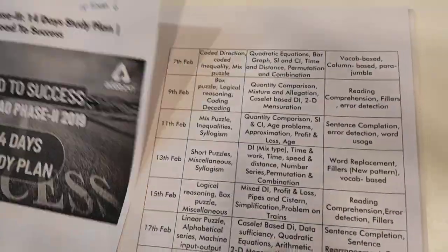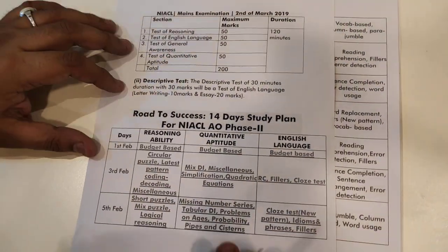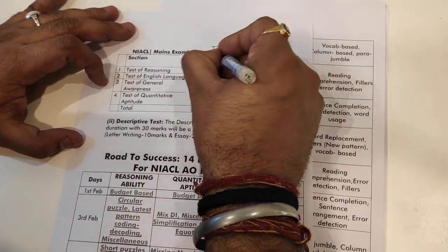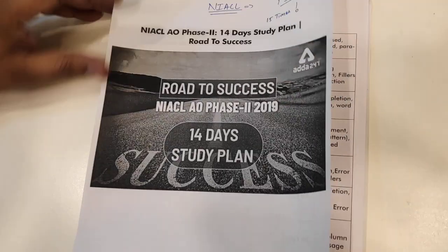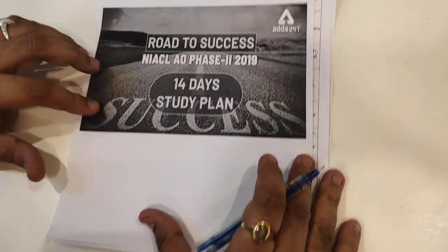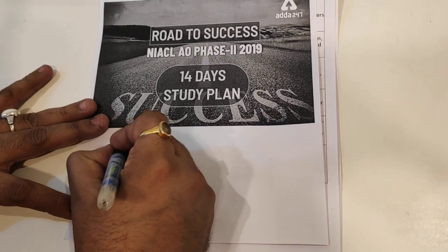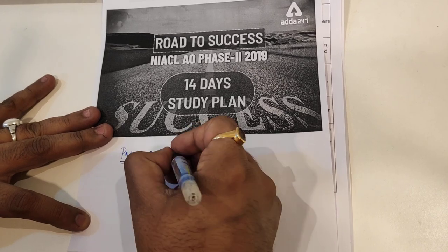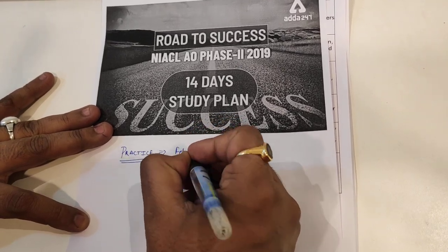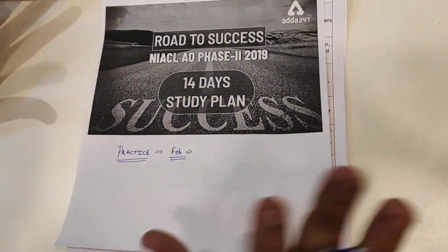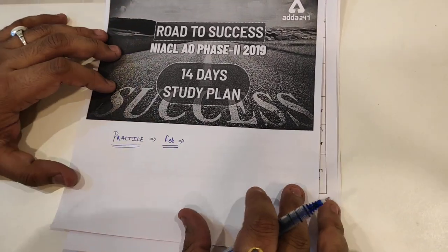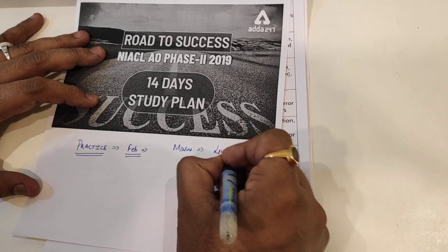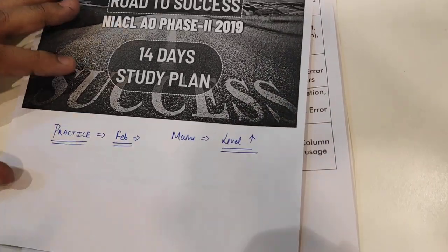One important point is that the exam date is the 2nd — and when we have the exam date, we have to practice because there is no time. February is already going, so you have hardly one month. The level for the Mains examination is altogether different.